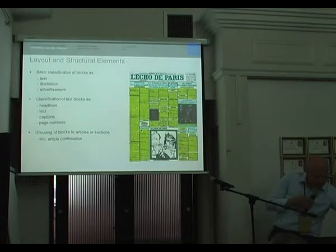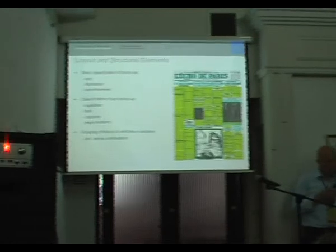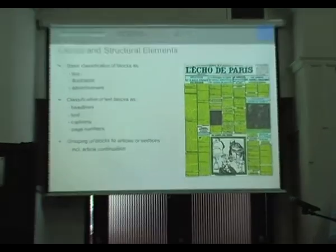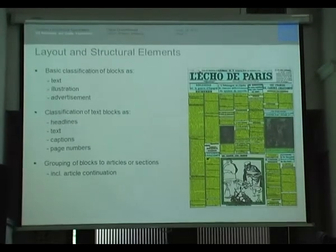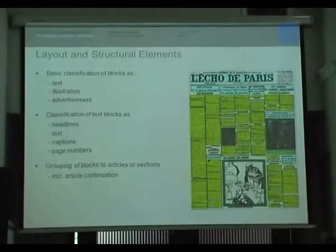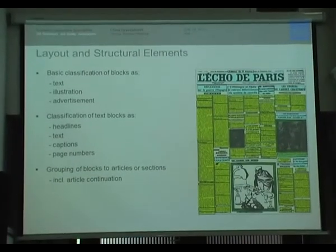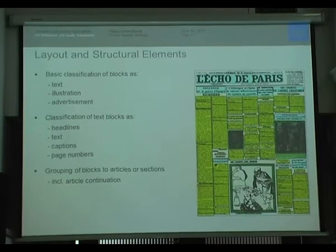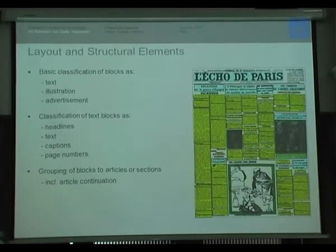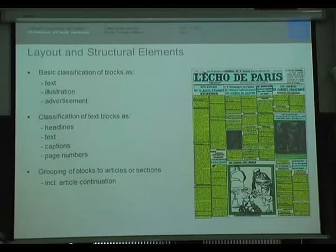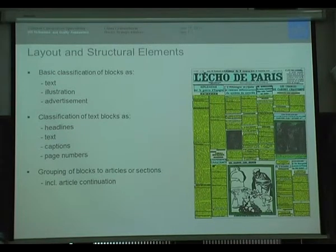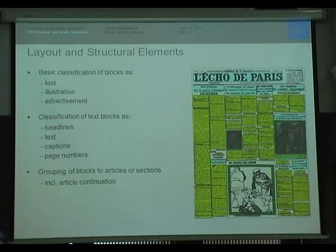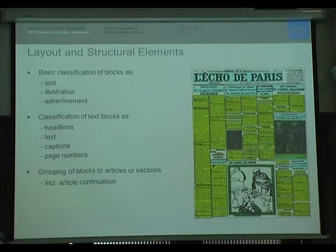Regarding layout and structural elements: typically, the basic classification of blocks includes regular text blocks, illustrations, and advertisements — those are the usual ones that are tagged. The next step is classification of text blocks as headlines, regular text blocks, captions of illustrations, tables, and page numbers. Page numbers can be read by OCR to bring pages into the right sequence. The final step is grouping those recognized and classified blocks into articles.